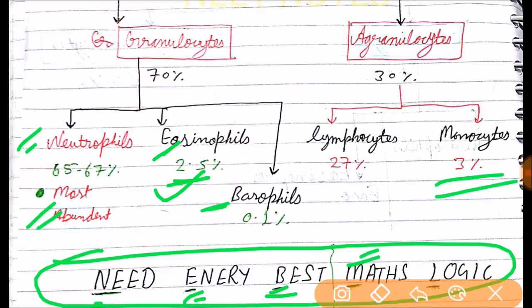M for monocyte, which is the least abundant agranulocyte, and L for lymphocyte, which contribute about 27 percent of total cells. So this was a trick that you can follow to remember.